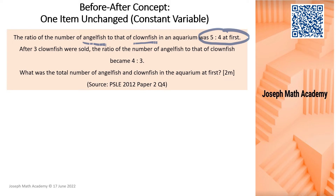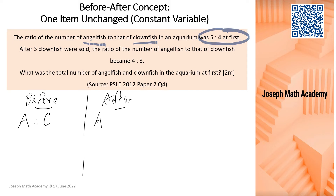I'm going to write down the before ratio and the after ratio. I'll use A to represent angelfish and C to represent clownfish. Let's plug in the first piece of information: at first, the ratio is 5 to 4.